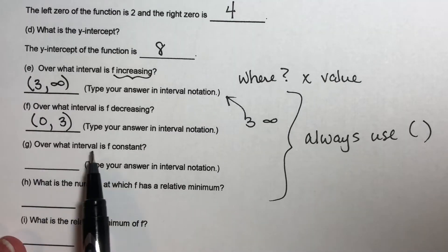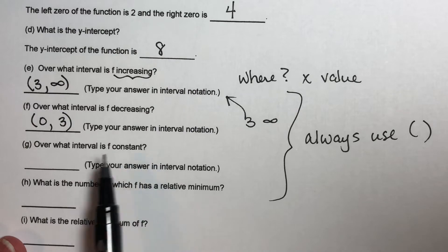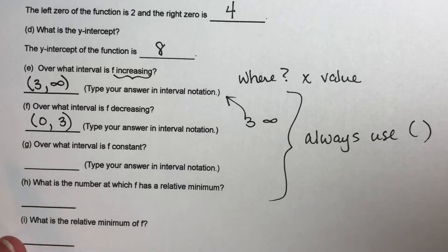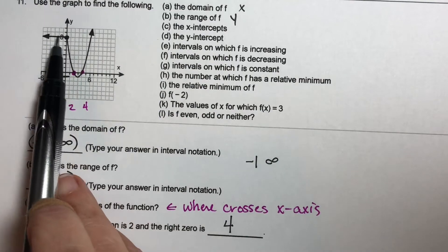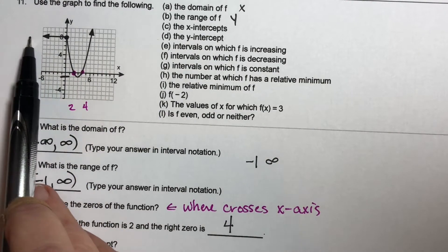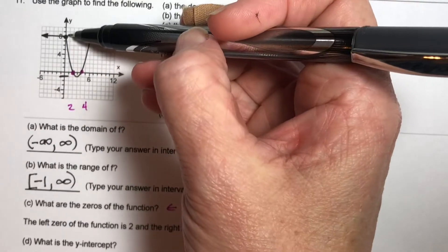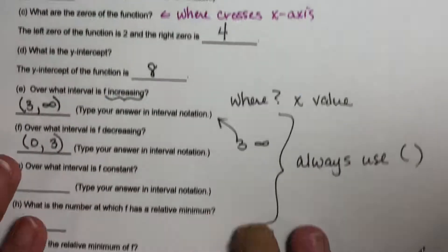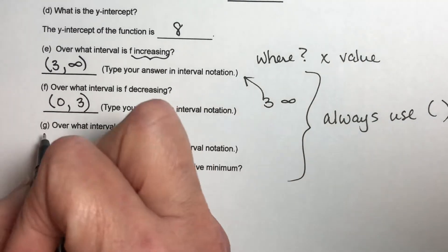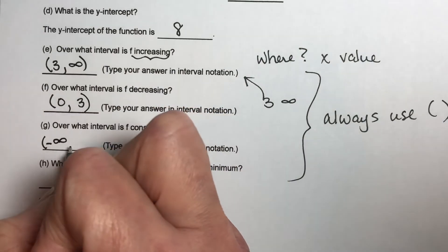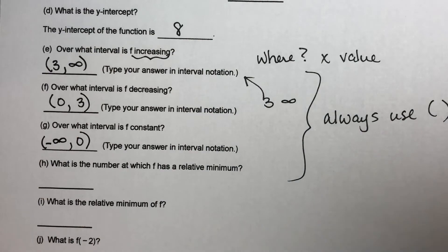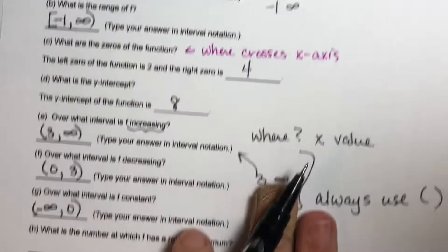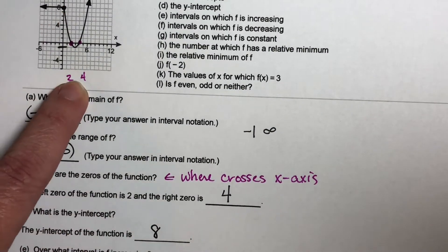Over what interval is f constant? This is asking, where is our graph flat? Our graph is flat from all the way, this extends forever, so negative infinity all the way up to where x is 0. So it is constant from negative infinity up to 0. And again, we use parentheses for all of these. Because at x equals 0 itself, it changes from being constant to decreasing.